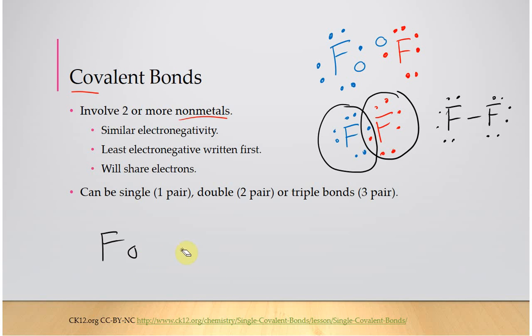So these are going to be electrons that are shared between two nonmetals. So if you see two nonmetals forming a bond, it is a covalent bond.